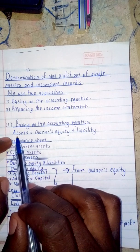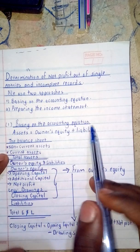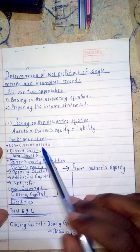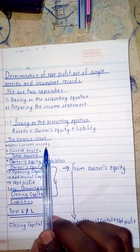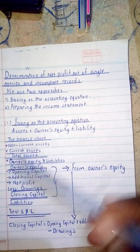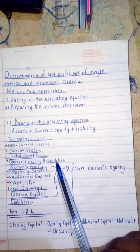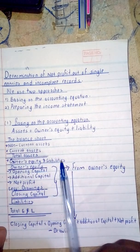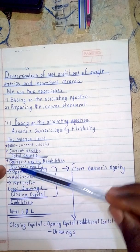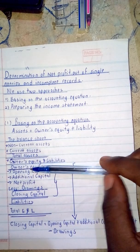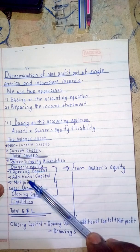For Approach One, basing on the accounting equation: Assets = Owner's Equity + Liabilities. From the balance sheet we have non-current assets, then current assets, giving total assets. Then we move to owner's equity and liabilities. From the owner's equity section we have opening capital, additional capital, net profit, and drawings.